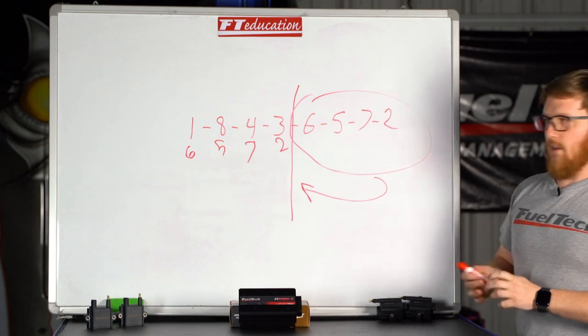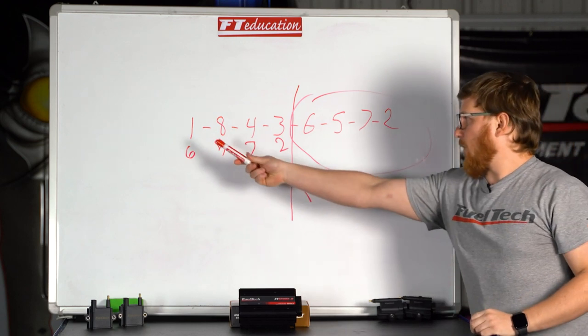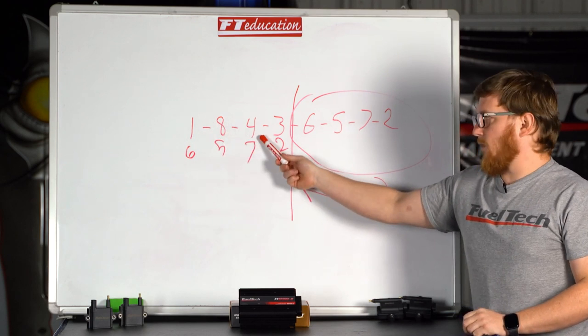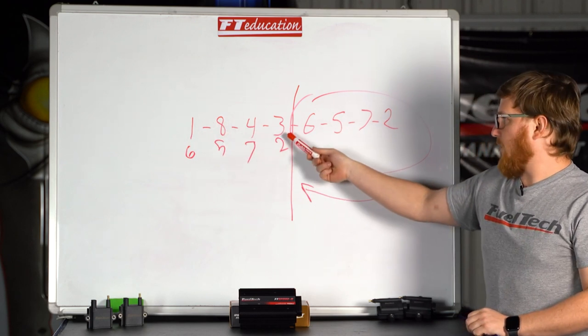So for instance, if you were doing the same firing order, it would fire one and six at the same time, eight and five at the same time, four and seven at the same time and three and two at the same time.